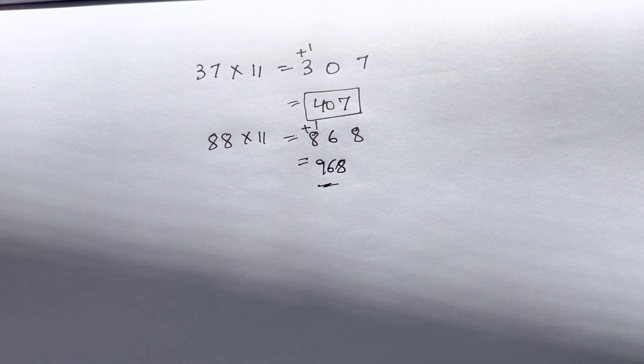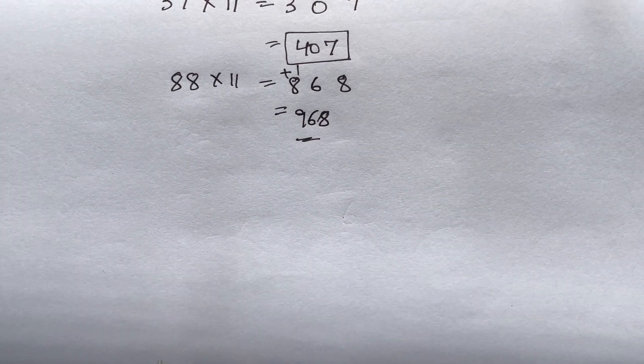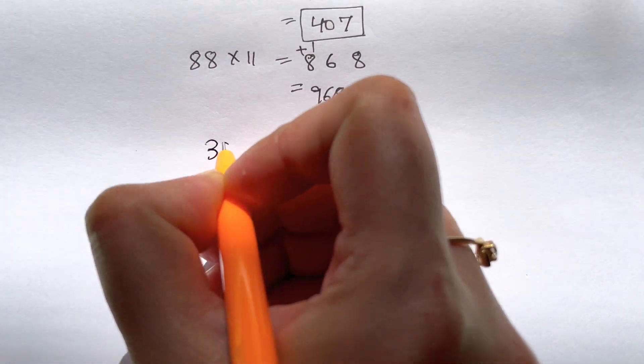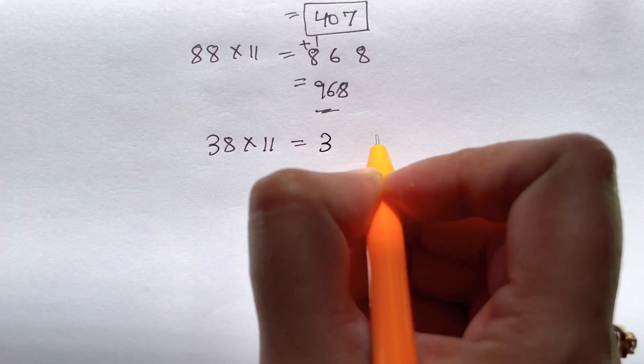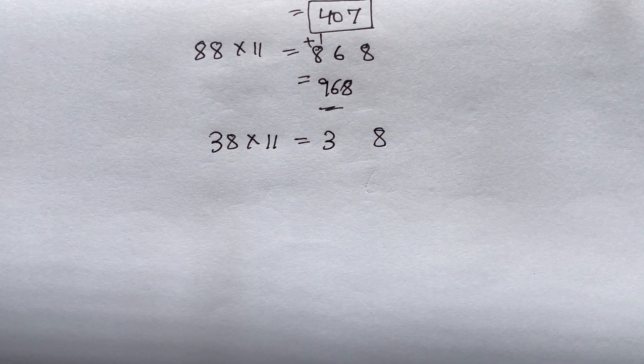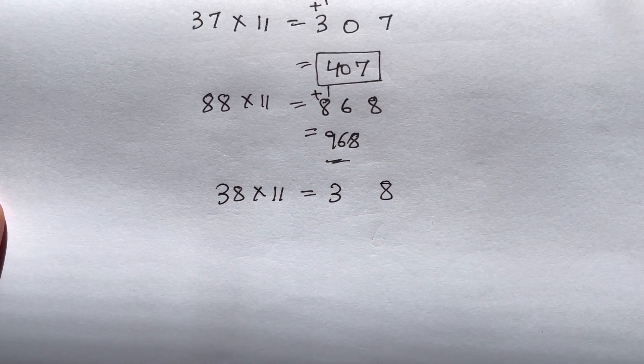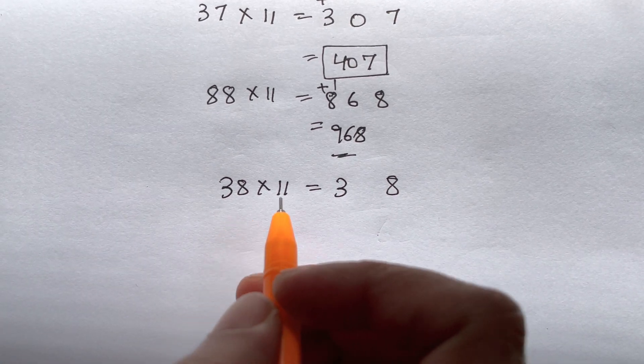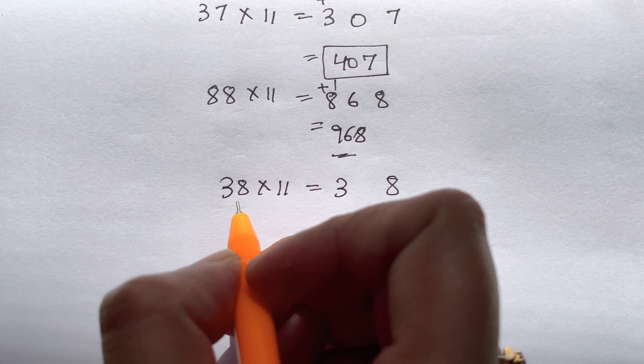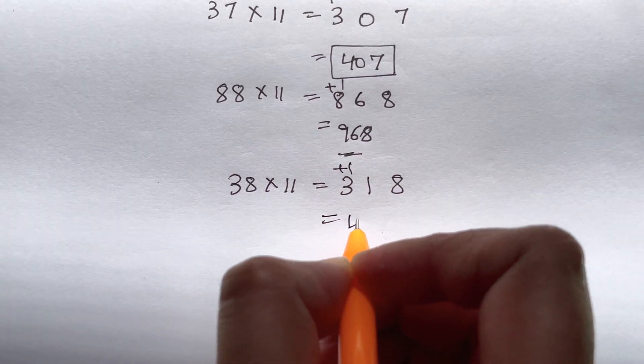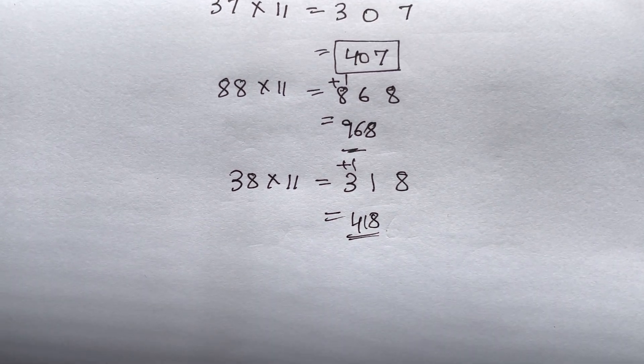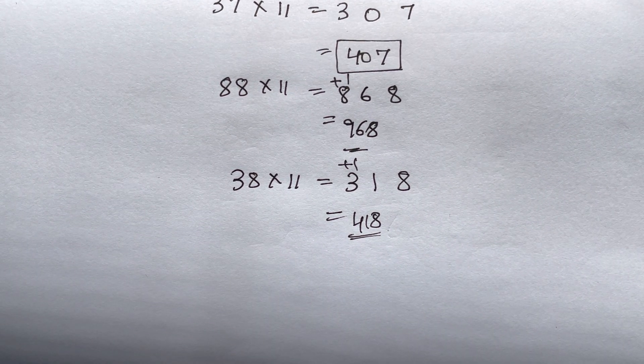Now let me take another example like 38 times 11. So you just write down 3 and 8. These things you have to do in your mind. 3 and 8, and 8 plus 3 that's 11, so you just have a carry over and that's 418 is your answer.